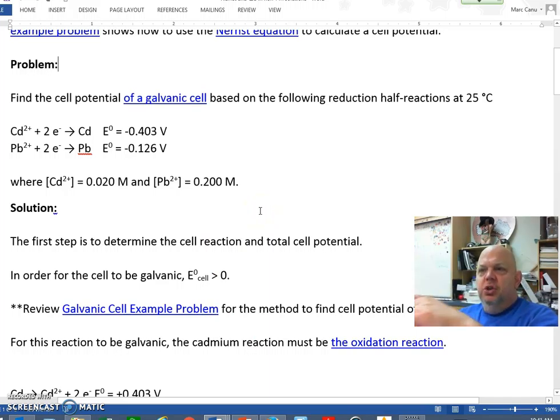But they're not. In this case we're looking at non-standard conditions. When we look at non-standard conditions, the Nernst Equation is used to calculate the cell potential. So here's our problem. We're going to find the cell potential of a galvanic cell, think battery, based on the following half reactions at 25 degrees Celsius.